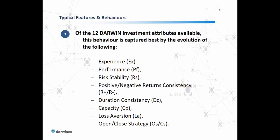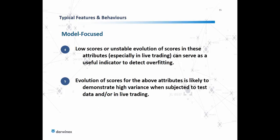Of the 12 Darwin investment attributes available, this behavior is captured best by the evolution of the following: experience, performance, risk stability, positive-negative returns consistency, duration consistency, capacity, loss aversion, and open-close strategy. Low scores or unstable evolution of scores in these attributes, especially when the strategy has been launched live as a Darwin, can serve as a useful indicator to detect overfitting.